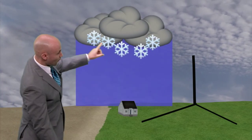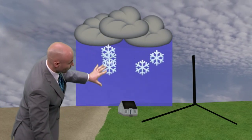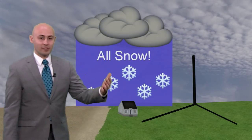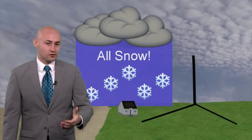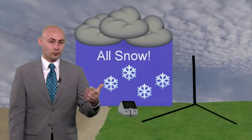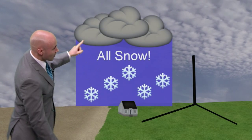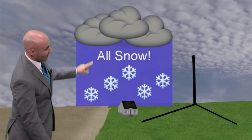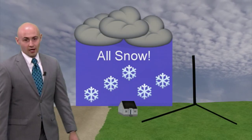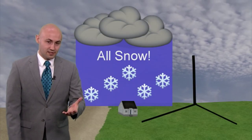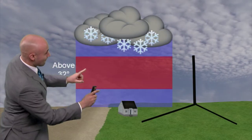So when snow falls, it falls and reaches the ground — that's when we would get accumulations of all snow. So when we forecast three to six inches of snow, we see that the entire column of air above us is supportive of snowfall.